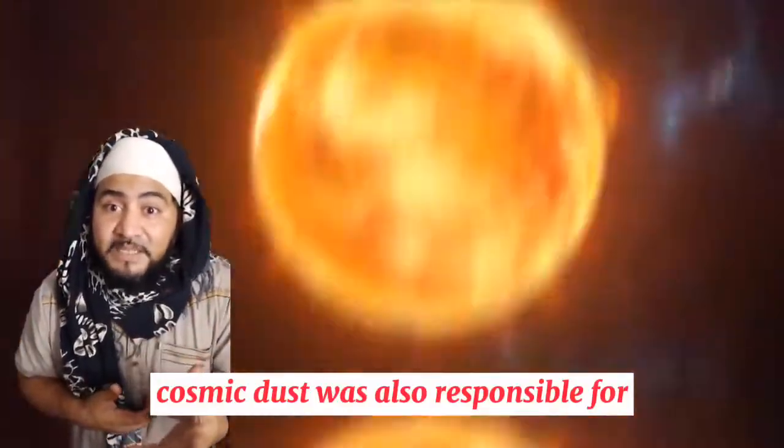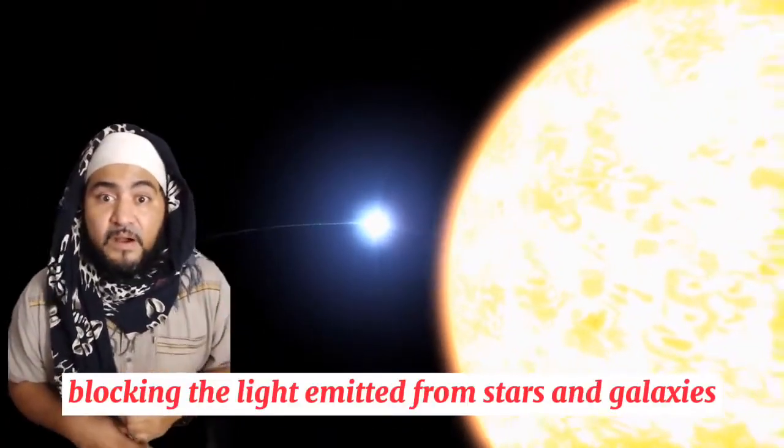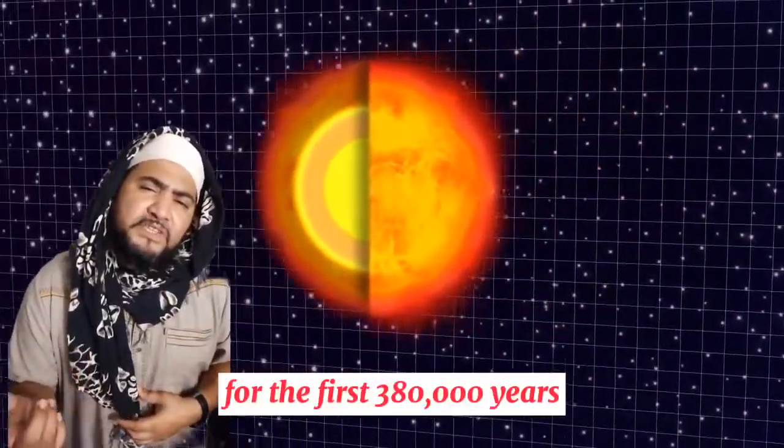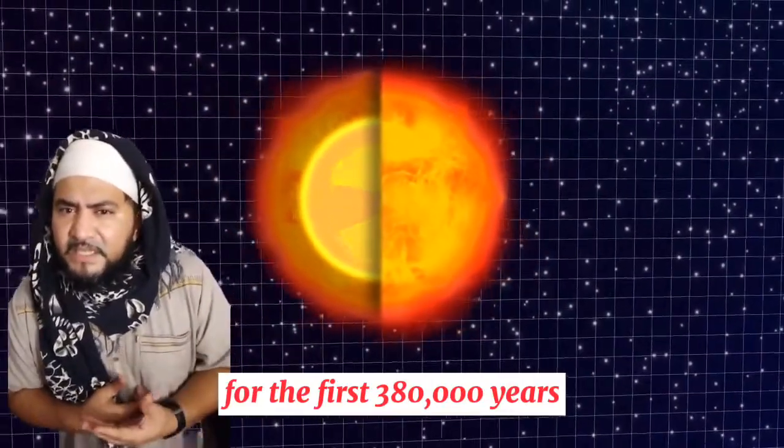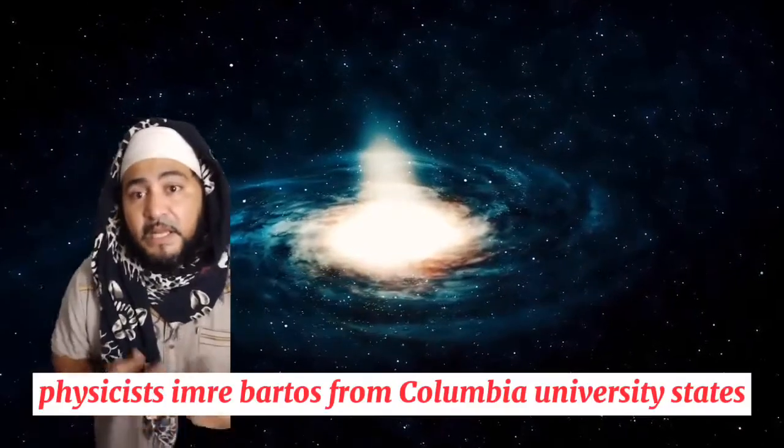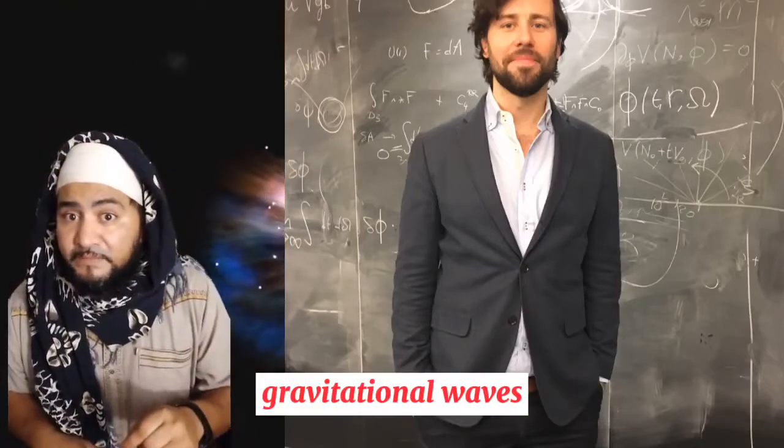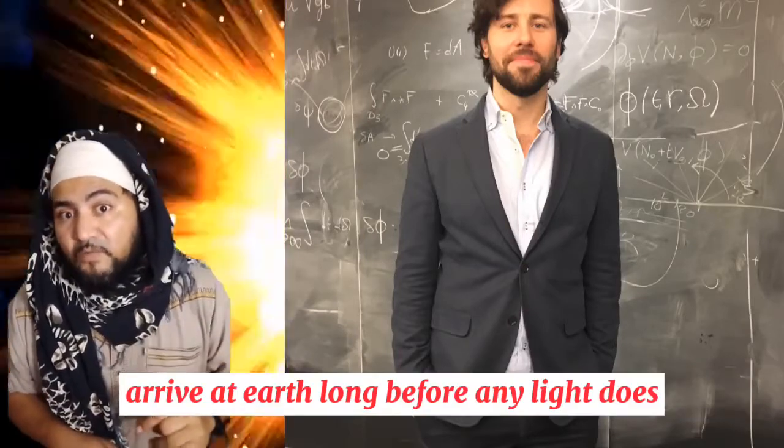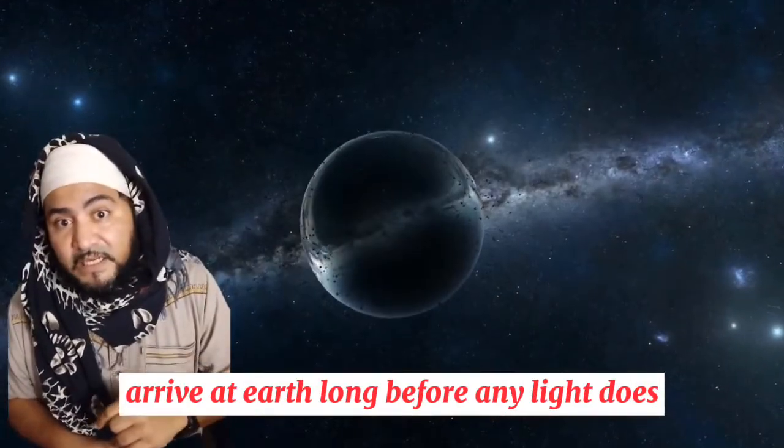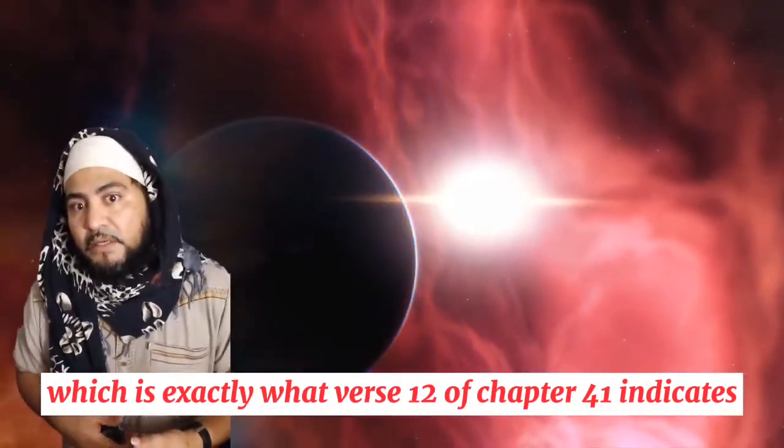Cosmic dust was also responsible for blocking the light emitted from stars and galaxies. Meaning that for the first 380,000 years or so, our universe was essentially too dark to shine. Physicist Emira Bartos from Columbia University states: A lot of gravitational waves arrive at earth long before any light does.